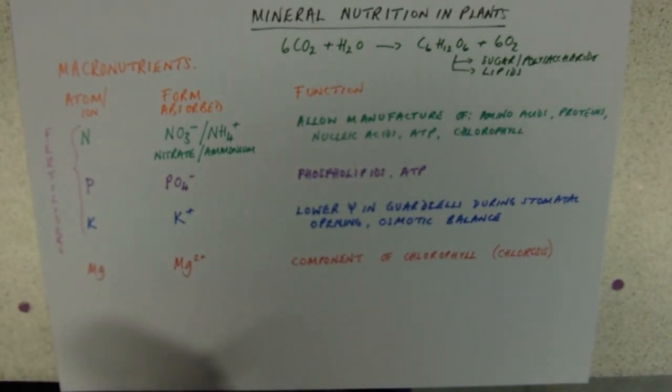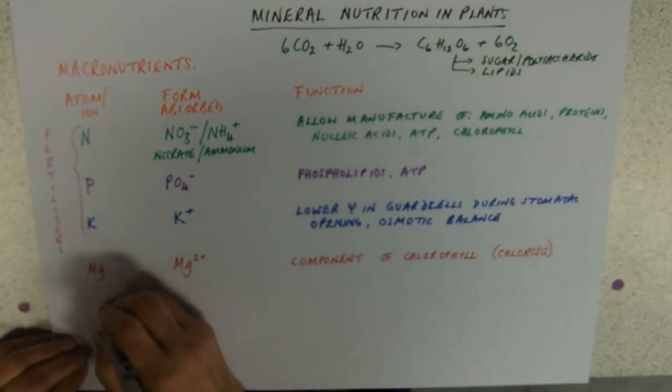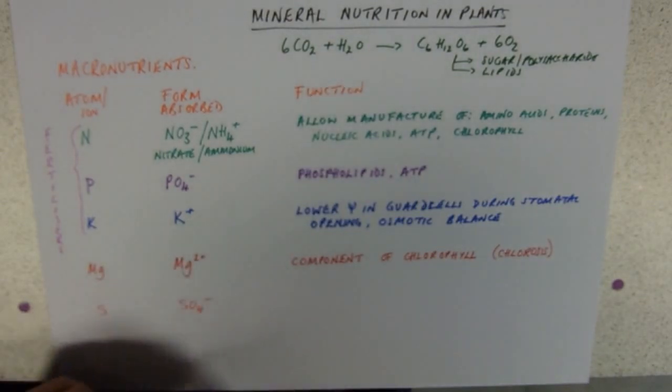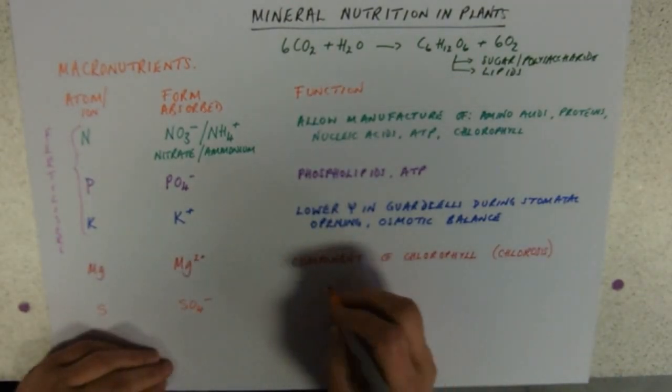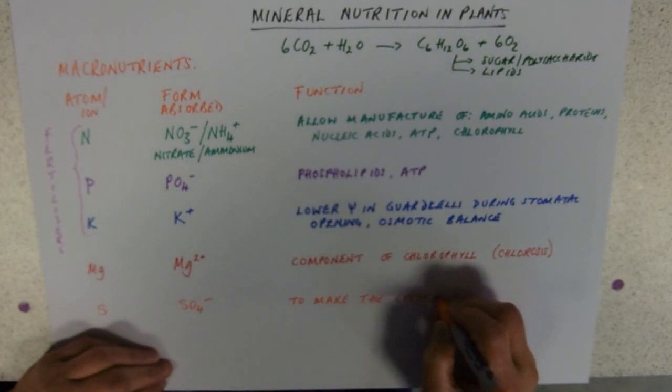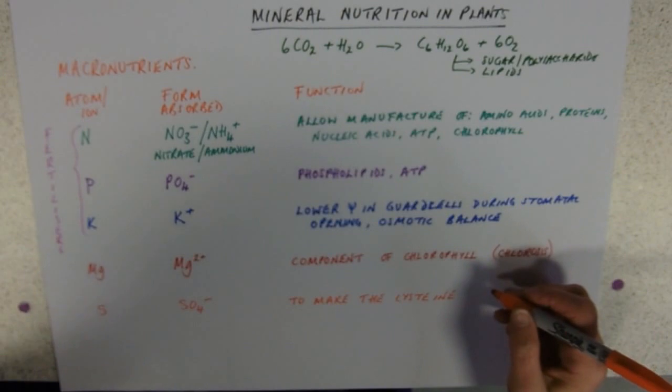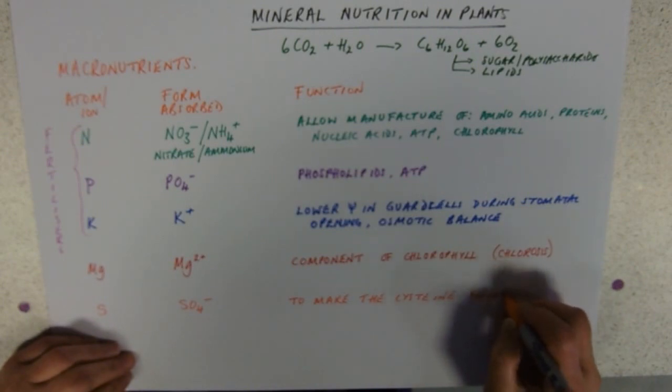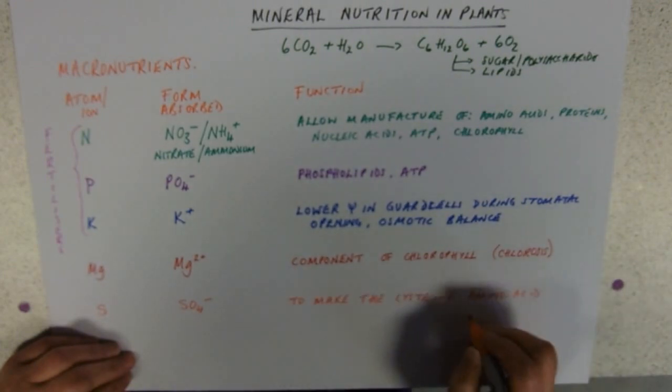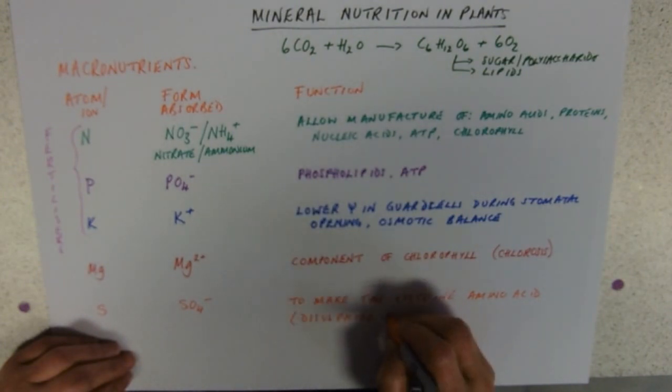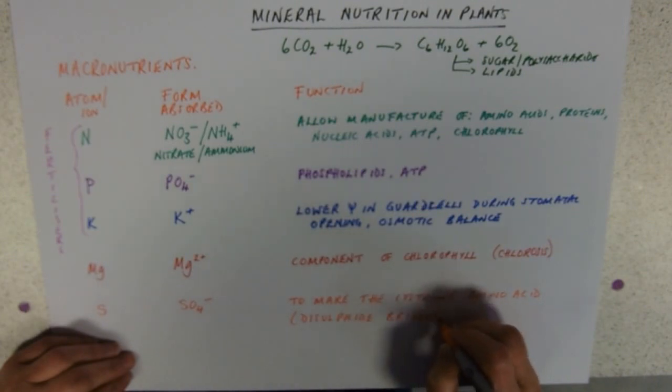And lastly, we've got sulfur. I'm only mentioning this really for synoptic reasons. These are absorbed in the form of sulfate ions, SO4 2-. Their function is in protein synthesis and they make the amino acid cysteine, it's the only amino acid with sulfur in it. I wouldn't particularly expect you to know that it's cysteine. If you just said to make an amino acid, so it's a component of proteins, to make the cysteine amino acid, that of course is involved in those disulfide bridges that maintain a tertiary structure.